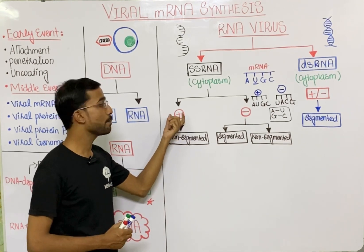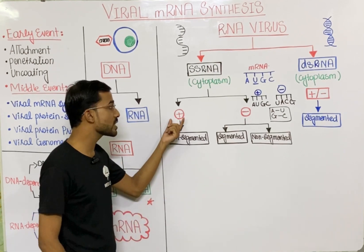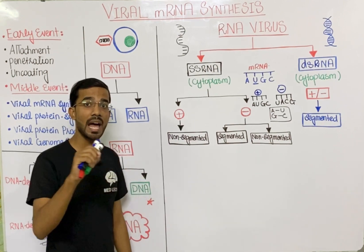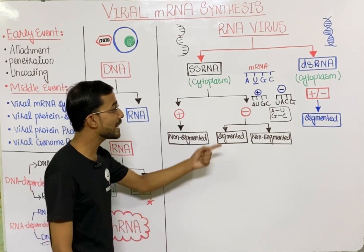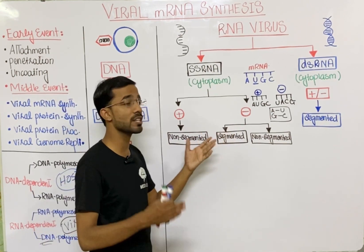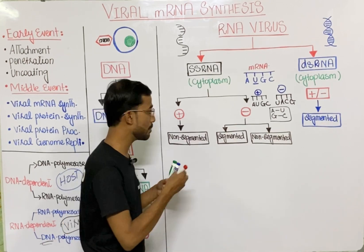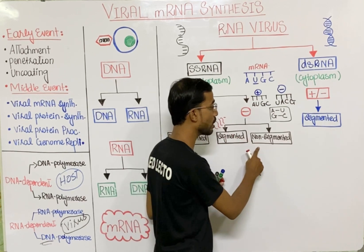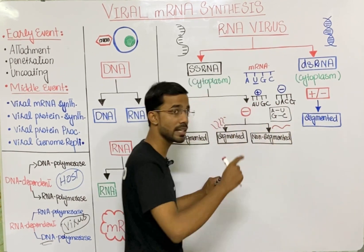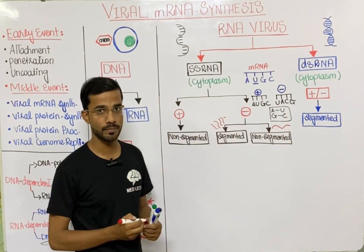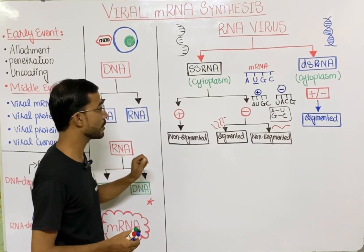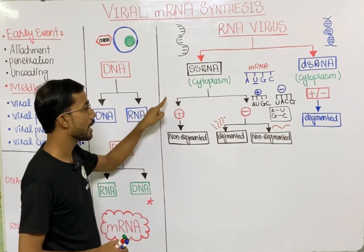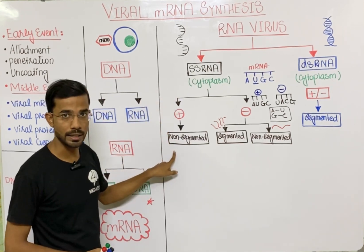In the majority of cases, positive polarity RNA is present in non-segmented form — it is present as a whole. But negative polarity RNA has two options: it can be present in segmented form or in non-segmented form as a single whole RNA. Now we are going to discuss single stranded RNA, positive polarity, and non-segmented.